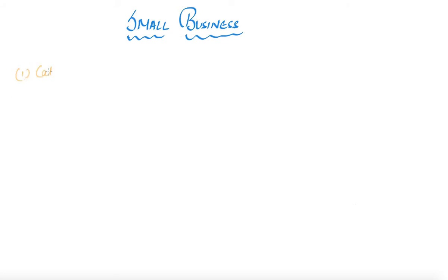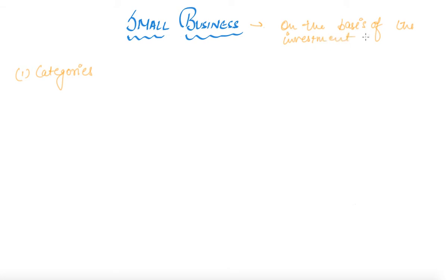So in this chapter, what we are going to learn — first of all, it is regarding the categories in which small business has been differentiated. If we talk about the definition of small business, the Government of India basically defines small business on the basis of the investment made in plant and machinery, and this is the basis on which different categories are classified under small business.